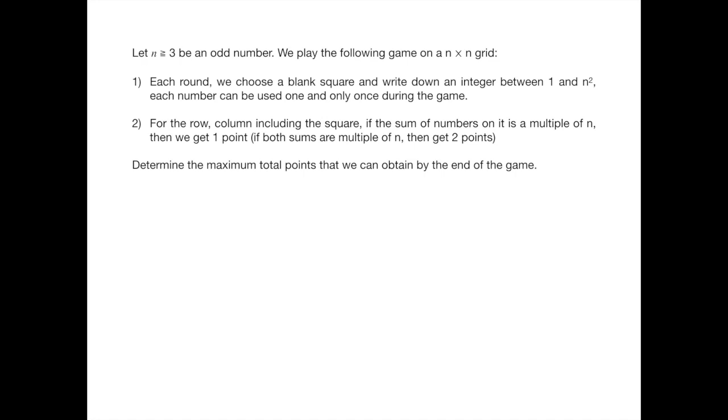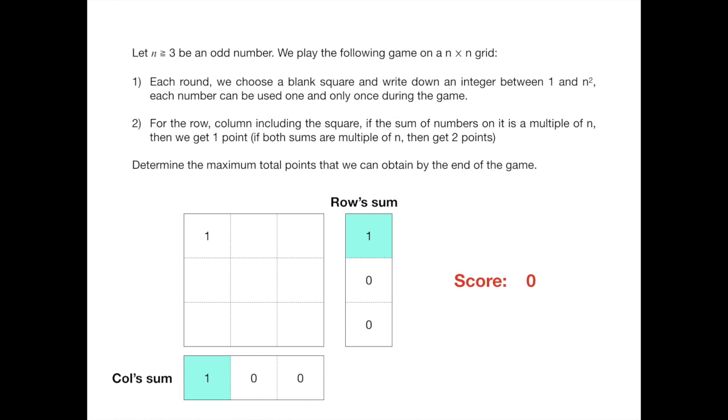Here is a simple example when n equals 3. I want to fill the table from 1 to 9 in the increased order. When I first put 1 I get 0 points. When I add 2 the row sums up to 3 which gives me 1 point. Then I put 3, it gives me 2 points because both the row and the column sum up to a multiple of 3. I do it continually for 5, 6, until 9 and it gives me 11 points. Unfortunately this is not the optimal strategy. So the question is to find out what's the best strategy and what will be the maximum point we can obtain. Let's see how we handle it.